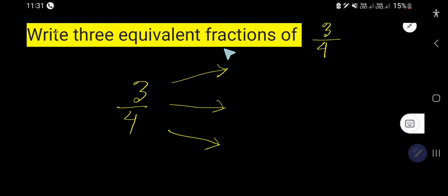How to write three equivalent fractions of 3 over 4. To find out the equivalent fraction of 3 over 4, we just need to multiply the numerator and denominator by the same number.